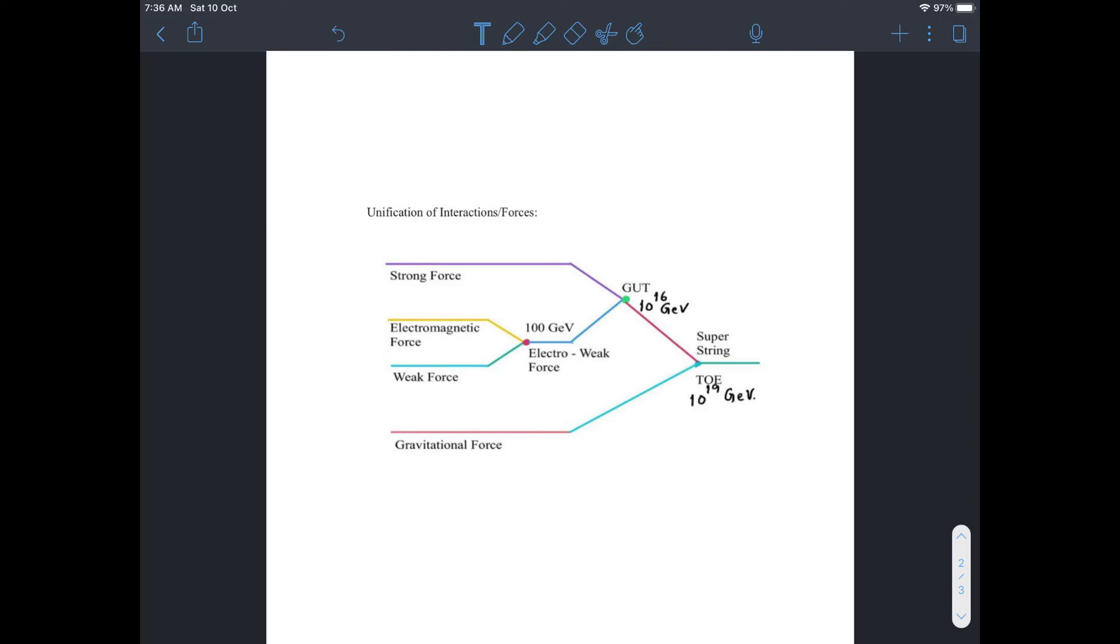Isaac Newton in 17th century described the gravitational force that acts between all objects having masses. As a result, it causes apples to fall from the trees and determines the orbits of the planets around the sun. Maxwell in 19th century demonstrated that electric and magnetic forces are two different aspects of a single force called electromagnetic force.